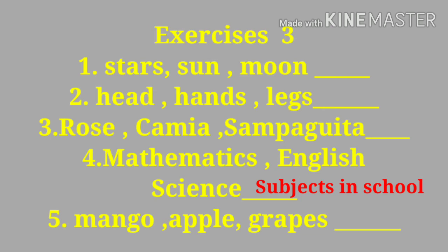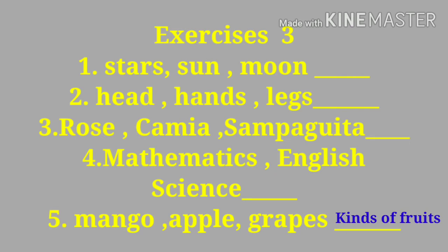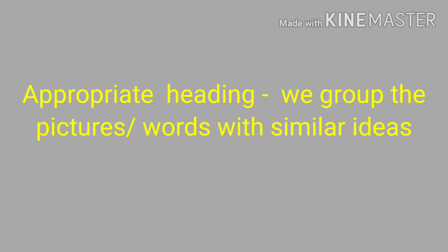Let us now move to number five: A. Mango, B. Apple, C. Grapes. What is the appropriate heading for this, class? 'Kinds of fruits' or 'different kinds of fruits.' Very good.